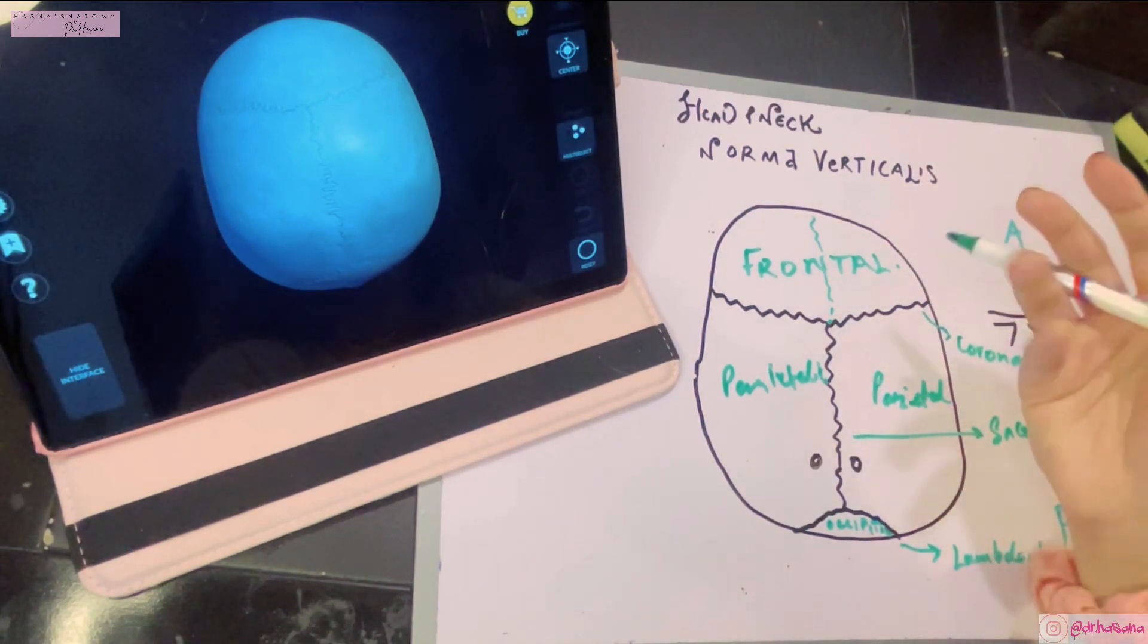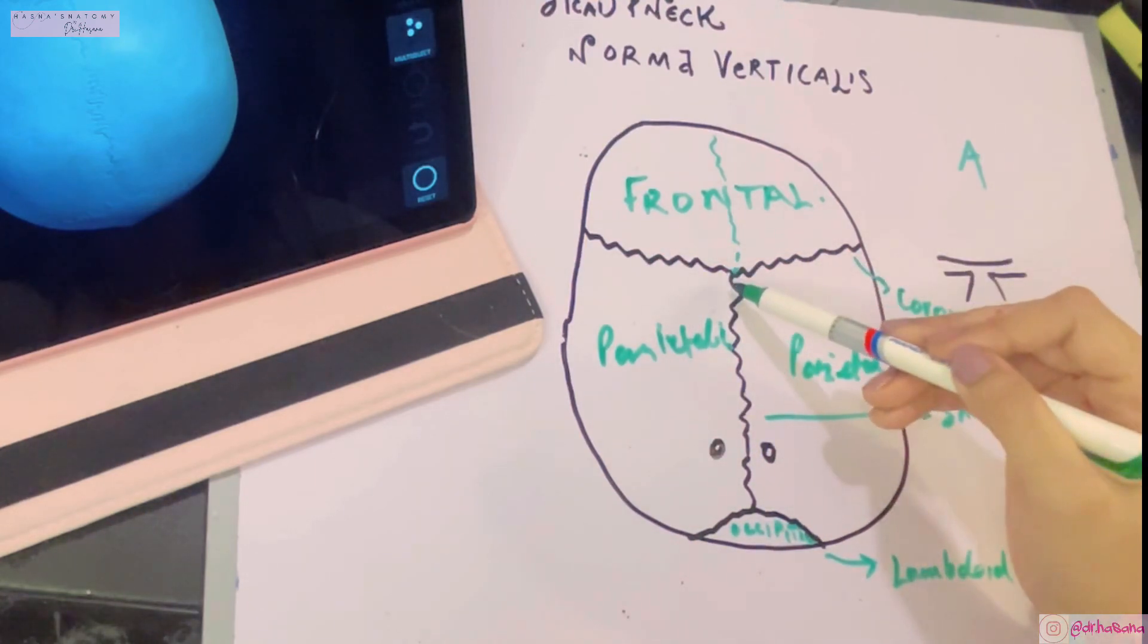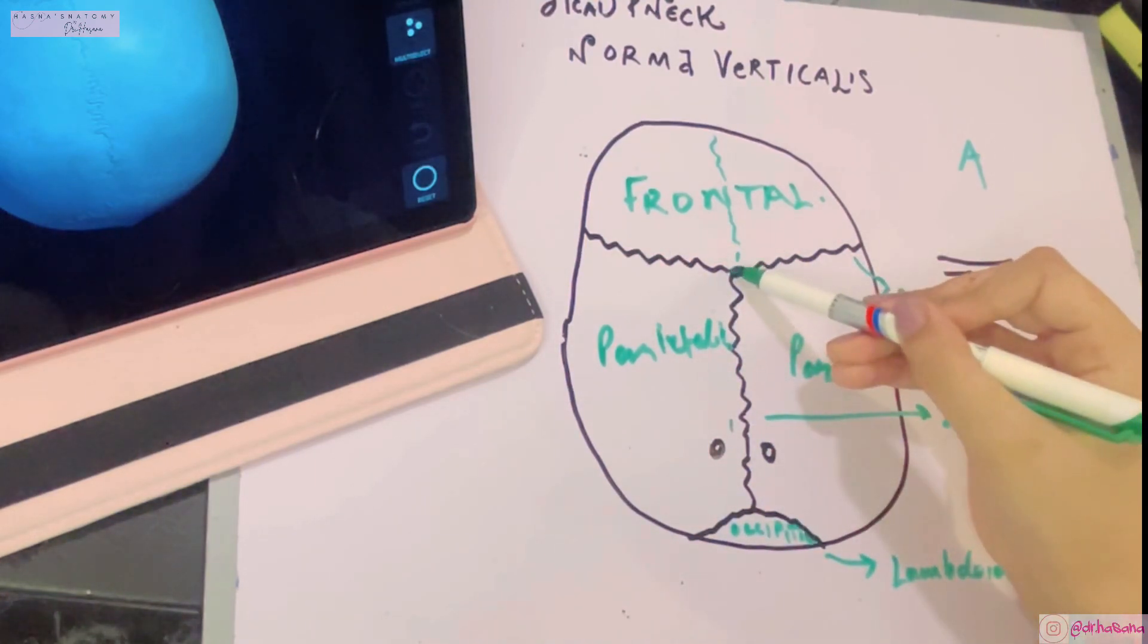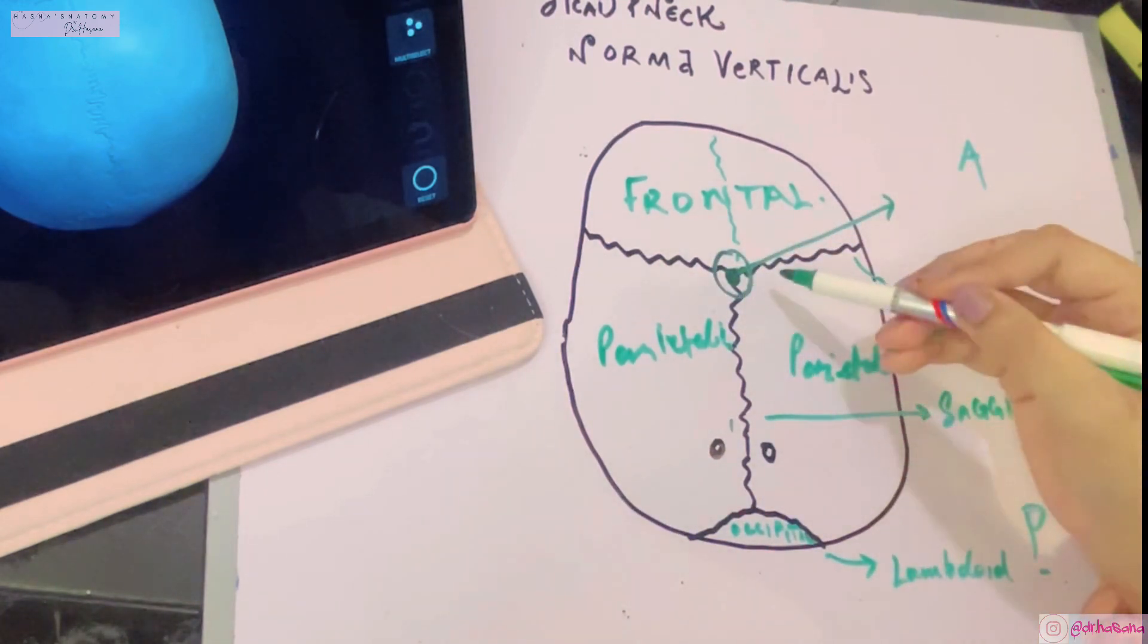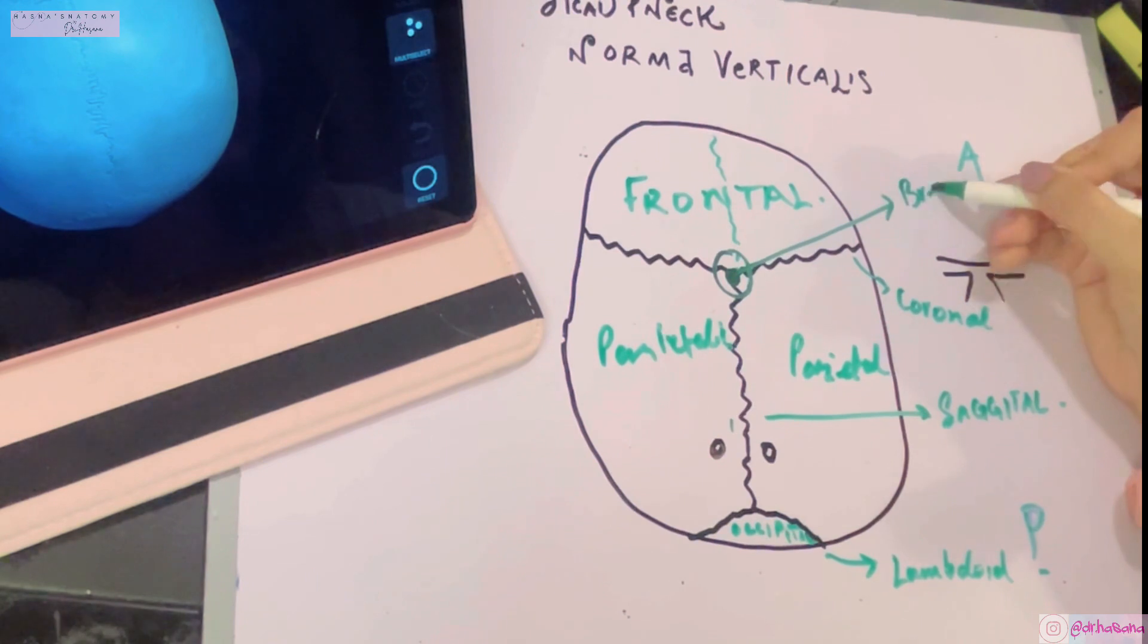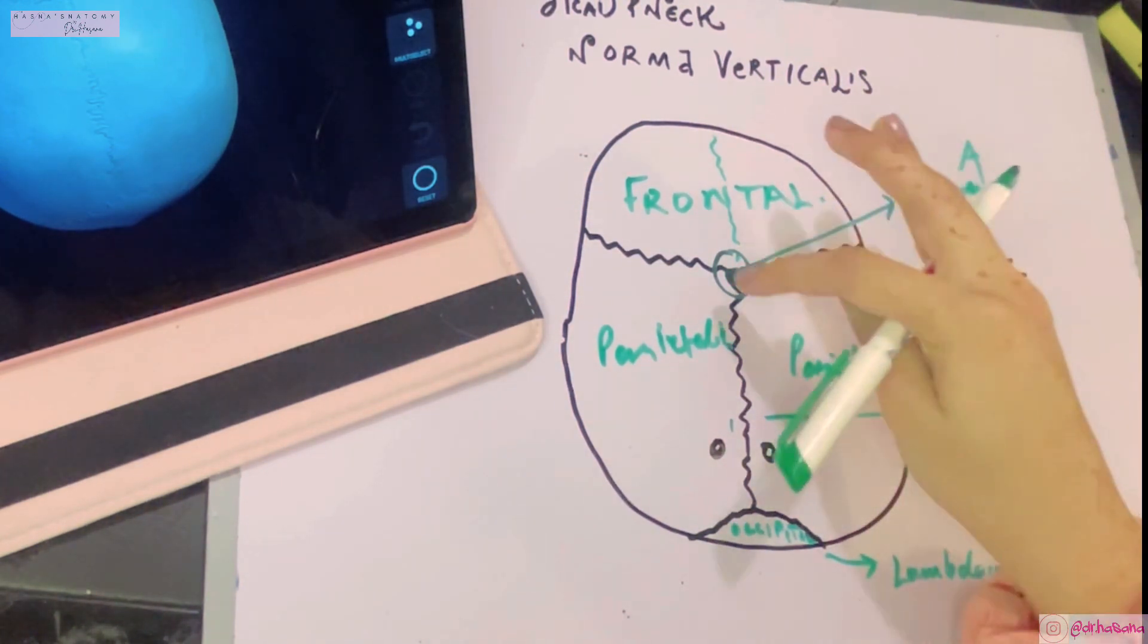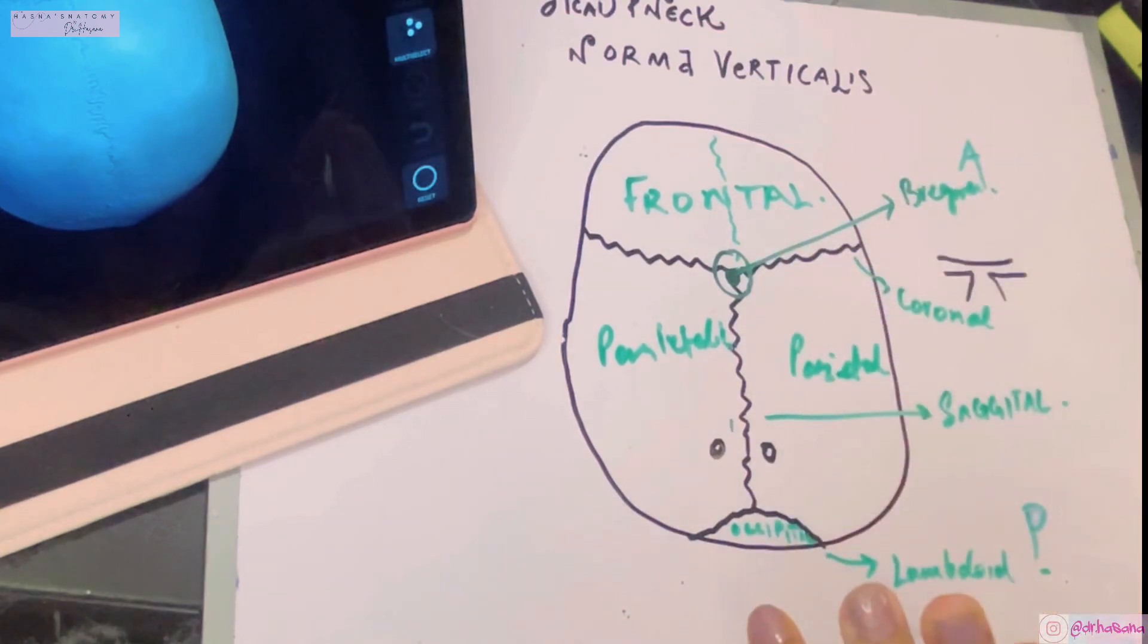Your coronal suture and the sagittal suture have this meeting point called the bregma. Why is bregma important? Bregma is important because when the baby is born, at the very start of life, this bregma area is not completely joined to each other. You can see here the frontal bone and the two parietal bones are meeting here, but this is the bregma. There is a gap in this area. These bones are not completely fused at this point.